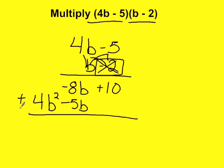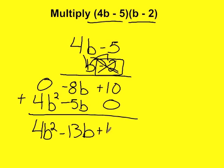I'm then going to add, put in 0s where there's no terms. 0 plus 4b squared is 4b squared. Negative 8b plus negative 5b would be negative 13b. And lastly, 10 plus 0 is 10. And now we have multiplied those polynomials. We end up with 4b squared minus 13b plus 10.